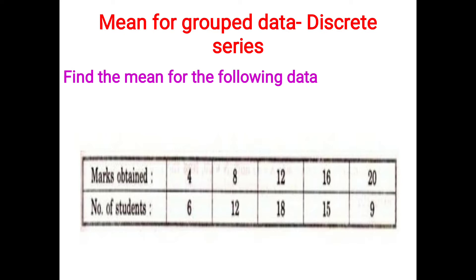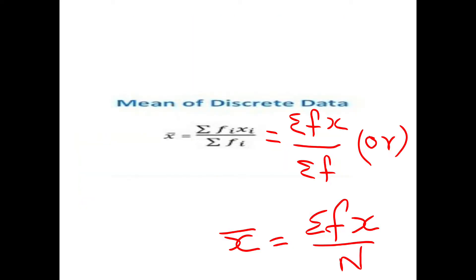Let us see mean for group data — that is discrete series. Find the mean for the following data: marks obtained and number of students. 4 marks — 6 students; 8 marks — 12 students; 12 marks — 18 students; 16 marks — 15 students; and 20 marks — 9 students. Let's see the formula for calculating mean of discrete data.